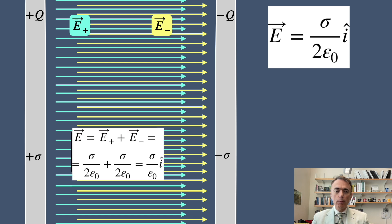The field from the positive plate points to the right and the field from the negative plate also points to the right. So the total electric field between the plates is sigma epsilon naught.